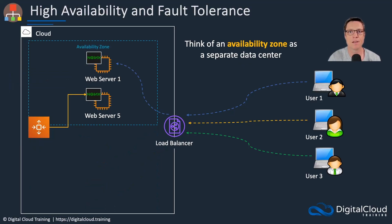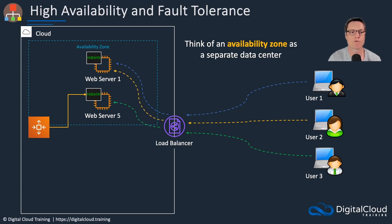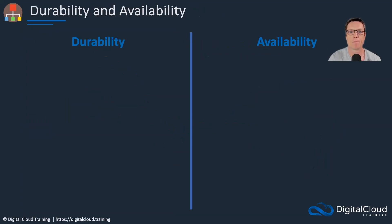Now, what if an entire AZ fails? Here we've gone down to one AZ — well, that's okay. We've still got two web servers, and we can launch more if we need more capacity. Even in the event of an entire availability zone failing, we still have access to our application, with those connections being redirected to web server one and web server five.